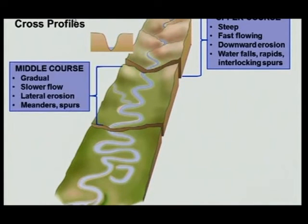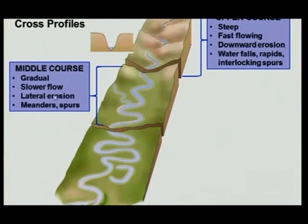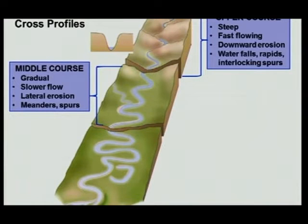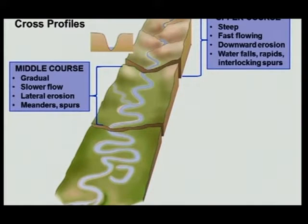Now the middle course: the slope is much more gradual and it will be a slower flow. Notice the difference — in the upper course we get downward erosion, but in the middle course we get lateral or sideways erosion. In the upper course the river was blocked in by the mountain and couldn't go sideways. As the river exits the mountain, the erosion can move sideways as well, so we've got lateral erosion. And of course, here we've also got your meanders forming.